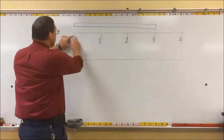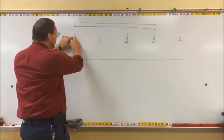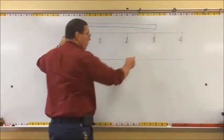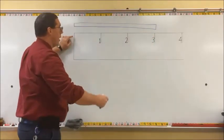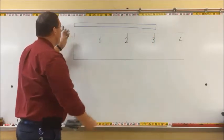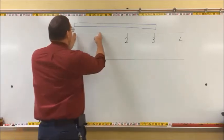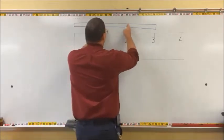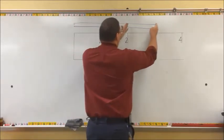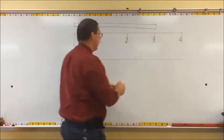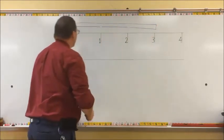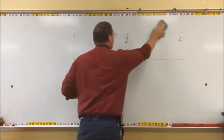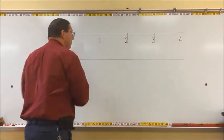From here, you would say zero, one, two, three. Because we're measuring a distance: this is one inch, this is another inch, and this is a third inch. So let's remember that when we're measuring.